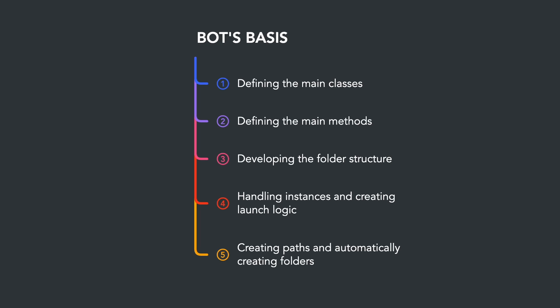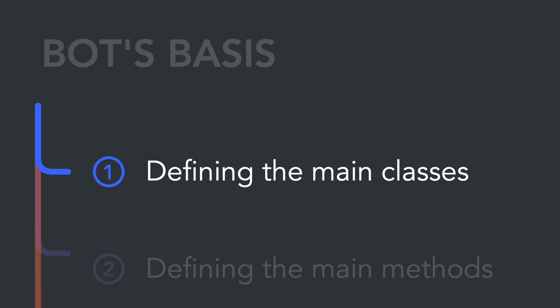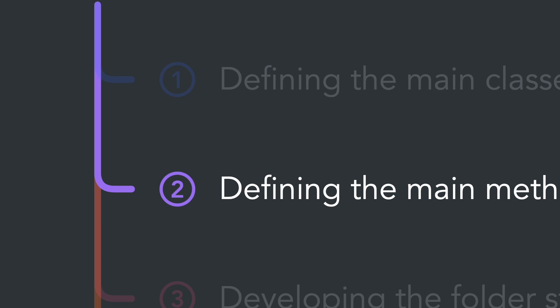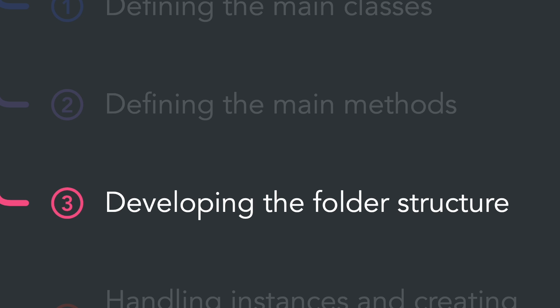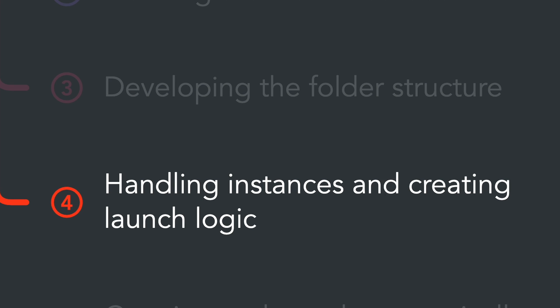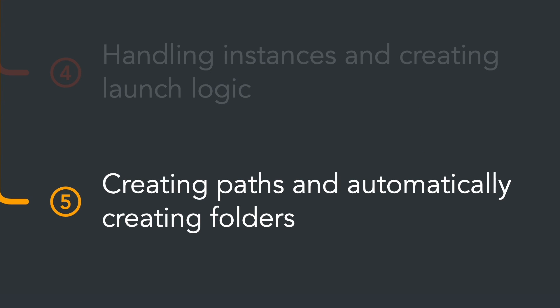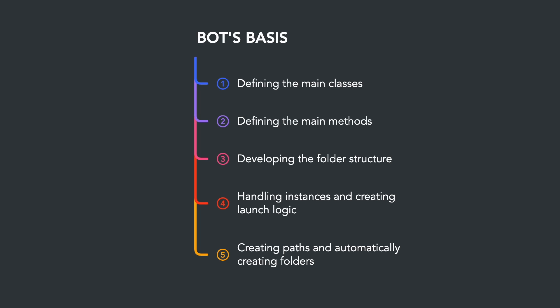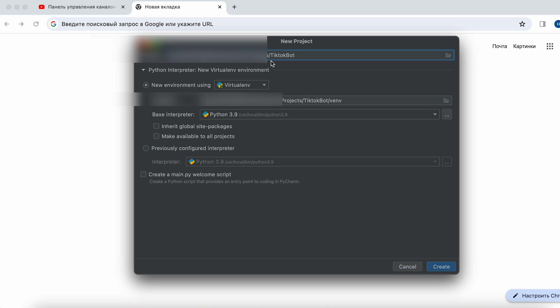What does developing the core of a bot mean? Let's create a plan and follow it. We need to define the main classes of the bot, determine the main methods, develop the folder structure, handle instances, outline the launch logic, create paths, and program the automatic creation of folders. Let's start the development — create a project and name it TikTok Bot.